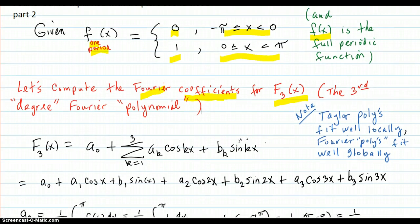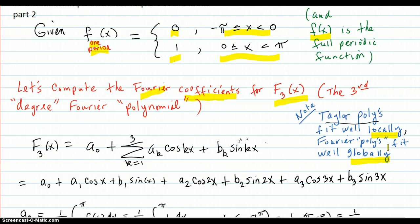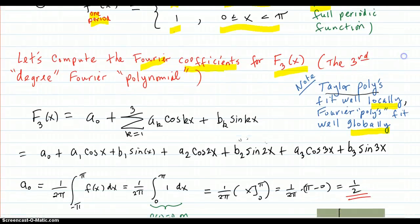Let's note this: Taylor polynomials ended up fitting a function locally, and Fourier polynomials are going to fit the function globally, because they're periodic. They're going to keep on fitting the same way forever. So anyway, back to our third degree Fourier polynomial.